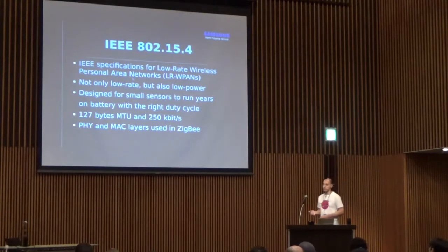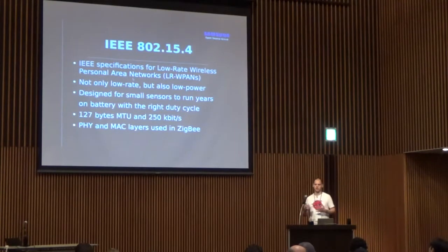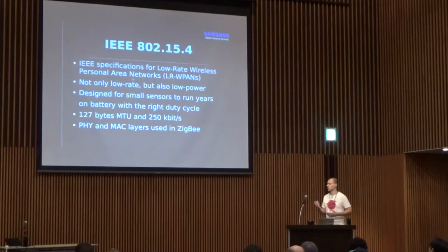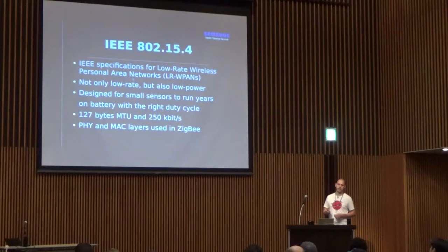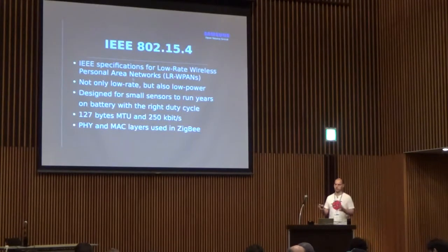There are some limitations with low-rate networks: very limited maximum frame unit and very limited transfer speed. One thing people often confuse is 802.15.4 with ZigBee. ZigBee uses the same PHY and MAC layer, but everything on top of that is completely proprietary and closed — so I'm not touching any of that.